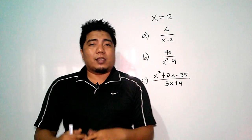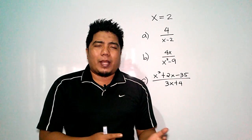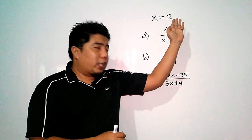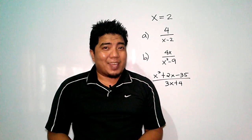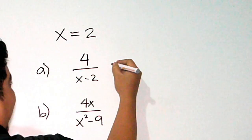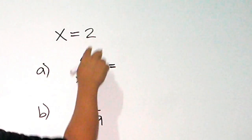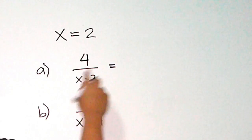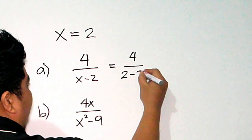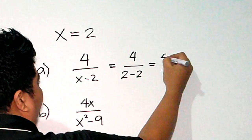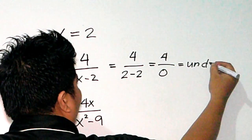We have x = 2. What we will do is replace x with 2 in our expression and then simplify it. In this first expression, the variable appears only in one part, so we change that into 2. That gives us 4 over (2 minus 2), which equals 4 over 0, which equals undefined.